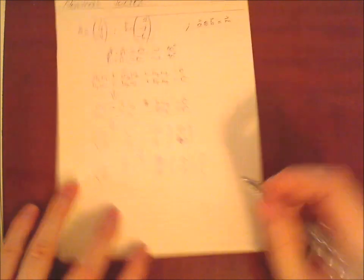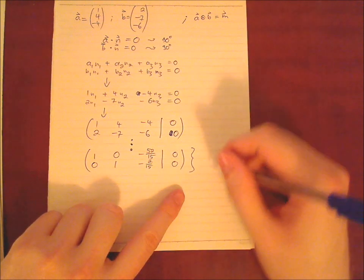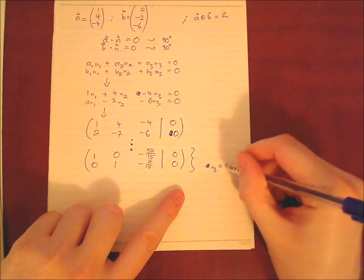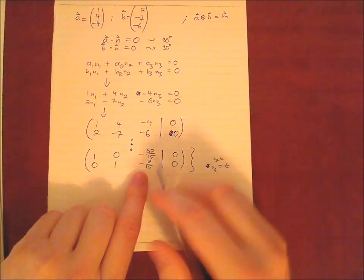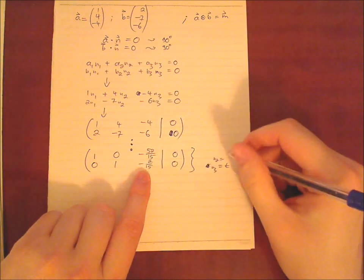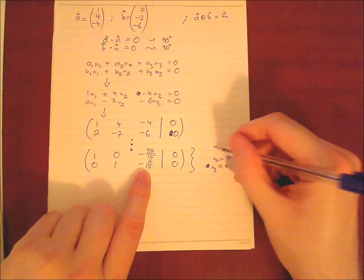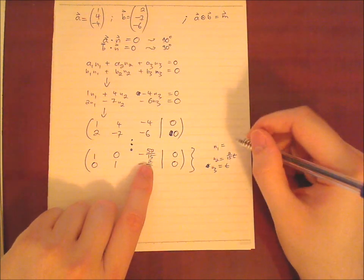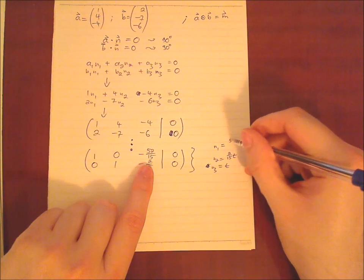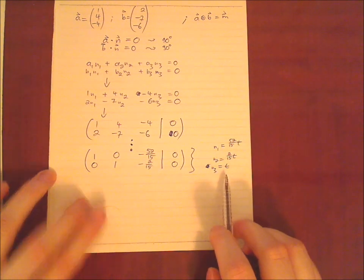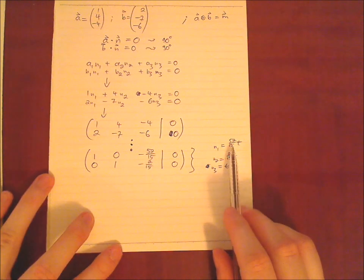Then we can insert a parameter we can say n3 is t. Then n2 is we take this to the right side is plus 2 divided by 15 t and the same way n1 is 52 divided by 15 t.